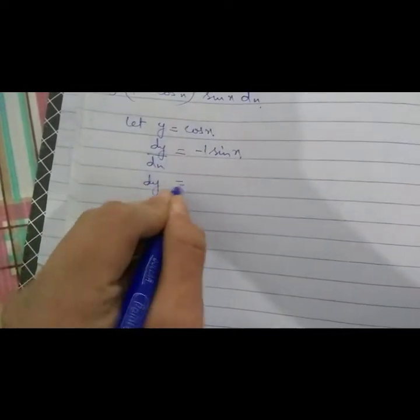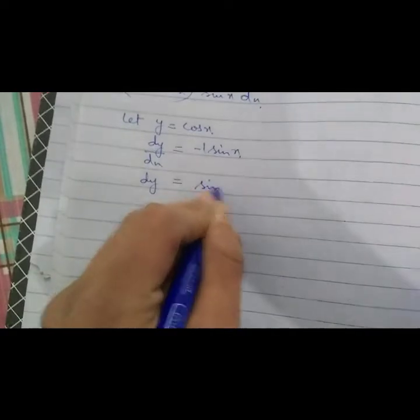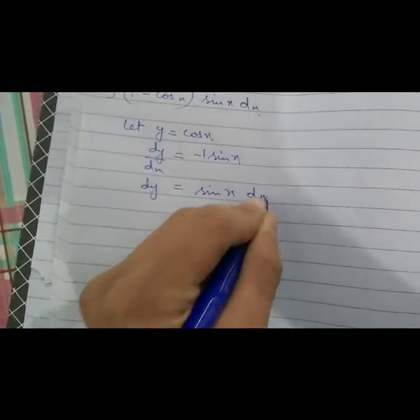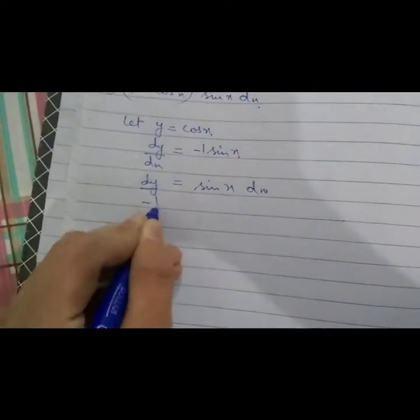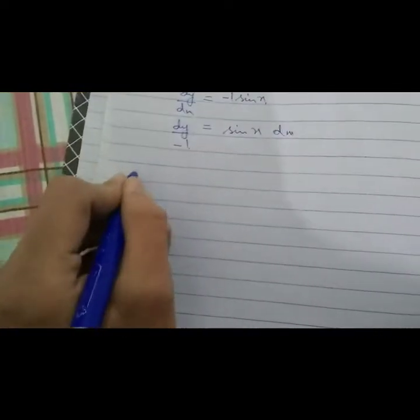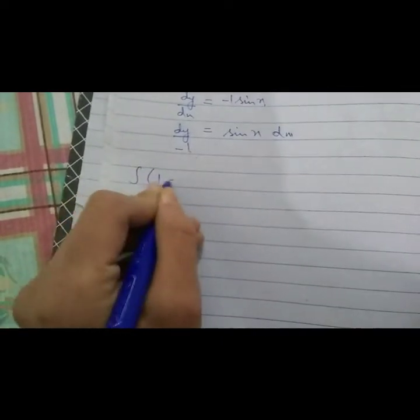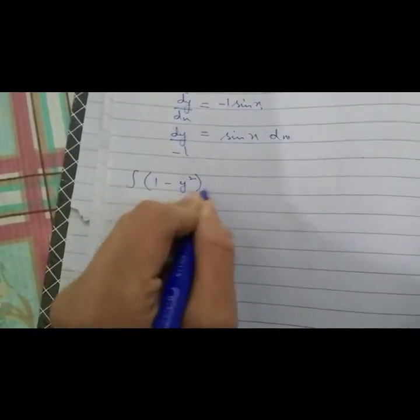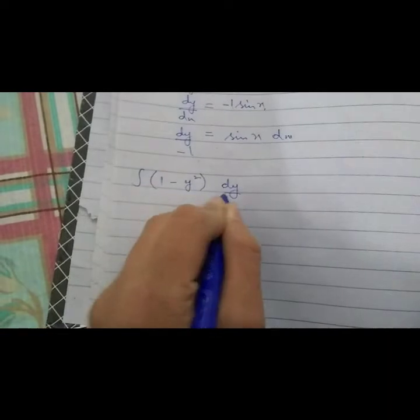So it will be dy upon sine x dx times minus sine x, and we have to replace all these values: 1 minus y squared, dy upon minus 1.